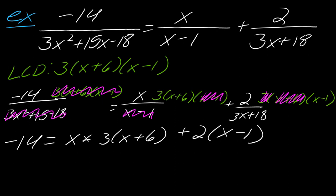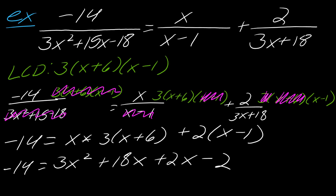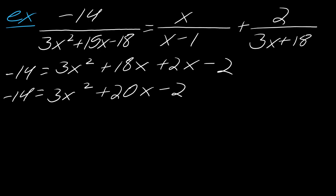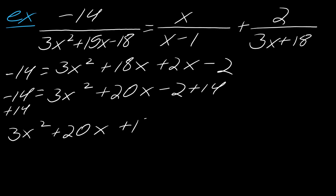Now I've just got to work all this out. This gives me 3x² + 18x + 2x − 2. So this becomes −14 = 3x² + 20x − 2. If I add 14 to both sides, I get 3x² + 20x + 12 = 0.